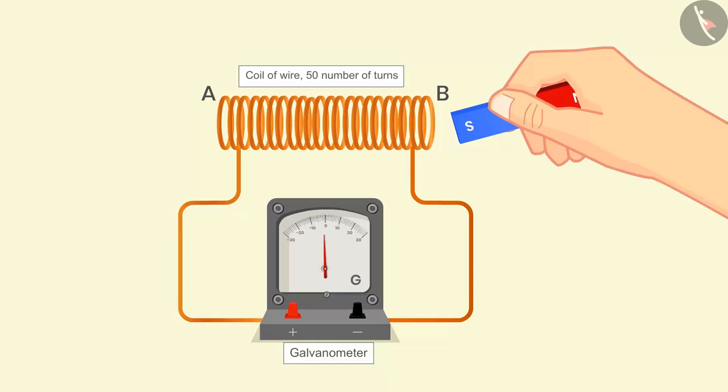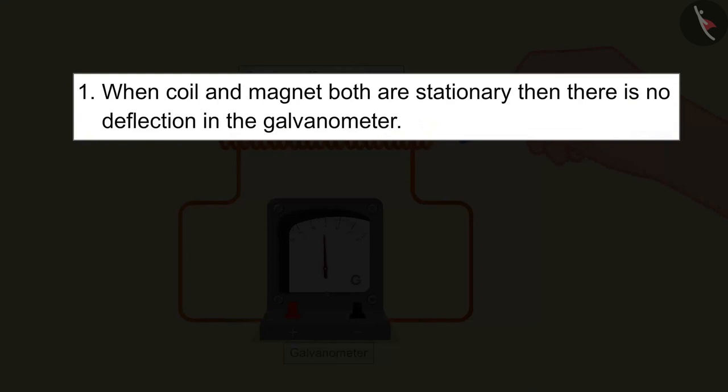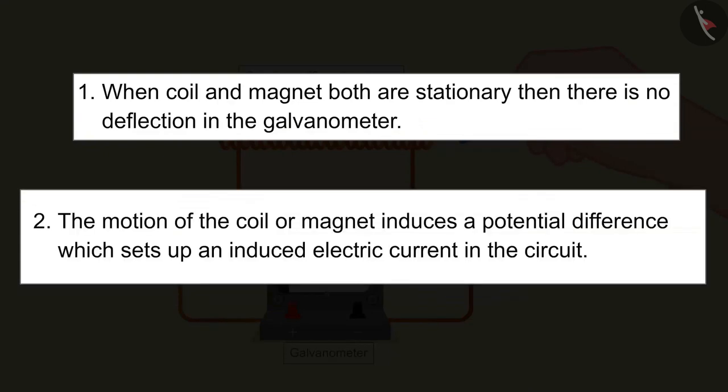So we can infer from this activity that when coil and magnet both are stationary then there is no deflection in a galvanometer. The motion of the coil or magnet induces a potential difference which sets up an induced electric current in the circuit.